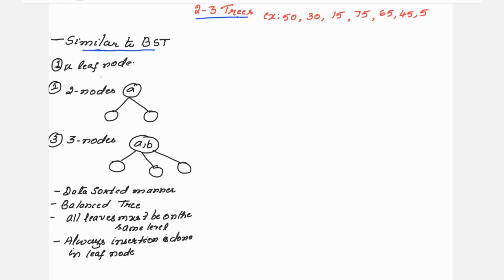Before that, let me recall what I said regarding two-to-three trees. It is similar to a binary search tree. In a binary search tree, whenever we try to insert an element, we check whether it is less than or greater than the parent node. Less than the parent node, we place it on the left side; greater than the parent node, we place it on the right side. A two-to-three tree has three types of nodes: the leaf node, the two-node, and the three-node.